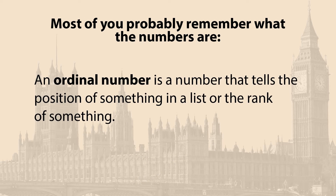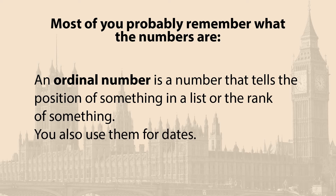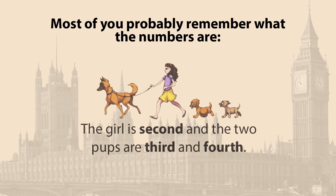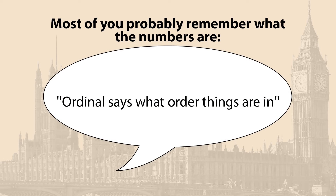An ordinal number is a number that tells the position of something in a list or the rank of something. You also use them for dates. It answers the question "which." In this picture, the girl is second and the two pups are third and fourth. Ordinal says what order things are in.